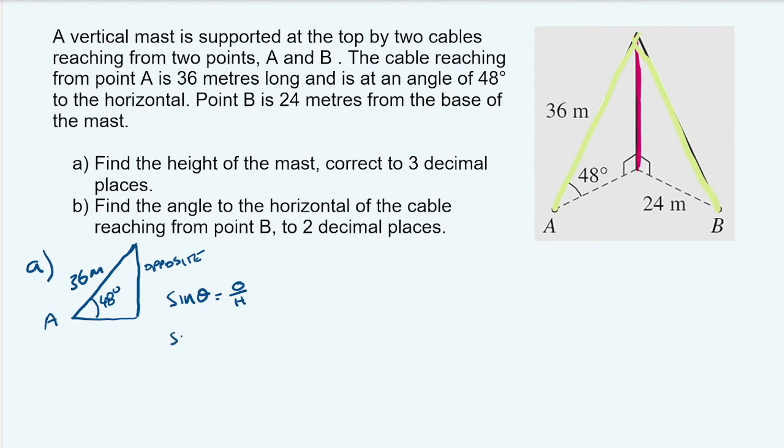Now I know the value of the angle. So I can pop that in. Sine 48 equals O, which we don't know, over 36, which we do know. So that's the hypotenuse. Do my little bit of algebra. Multiply everything by 36. I get 36 sine 48 equals O.